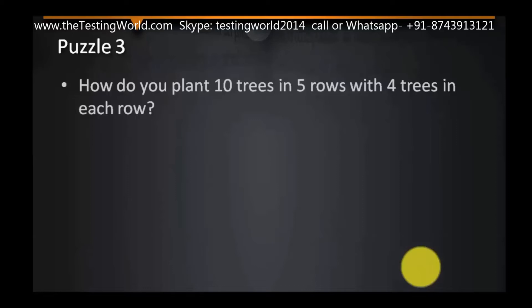I have 10 trees which I want to plant, but I have to plant them in such a way that I will have 5 rows and each row should have exactly 4 trees.